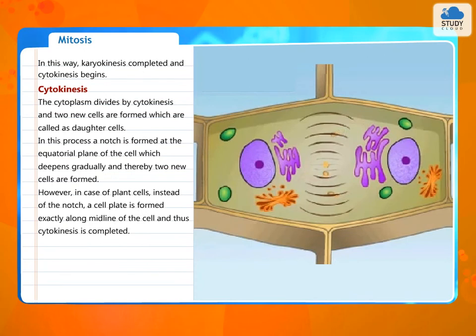However, in case of plant cells, instead of the notch, a cell plate is formed exactly along midline of the cell and thus cytokinesis is completed.